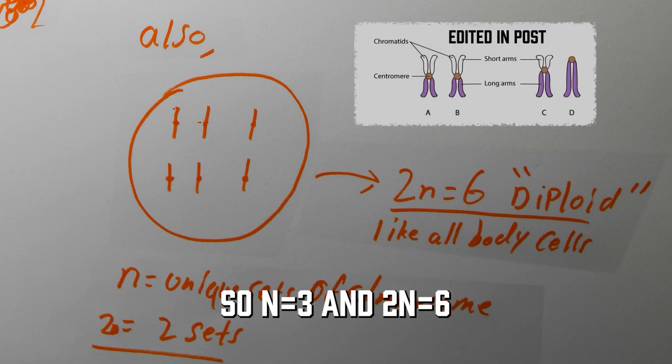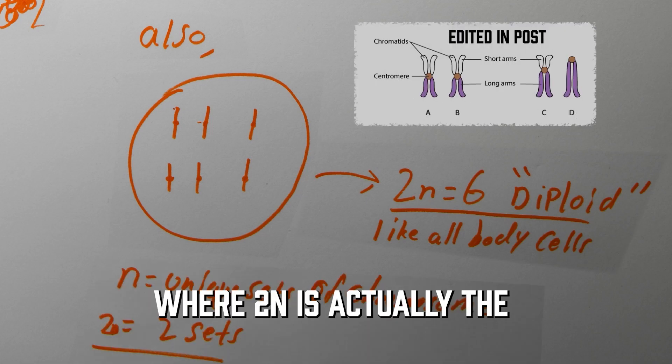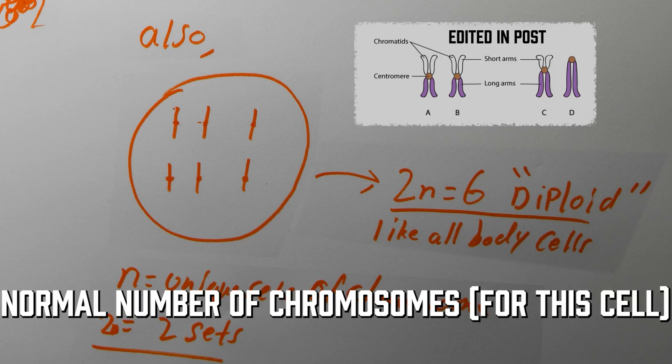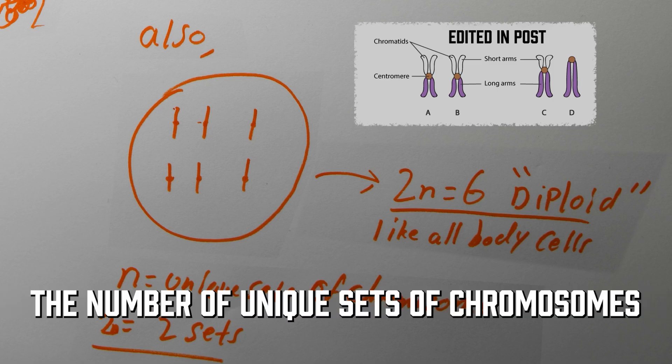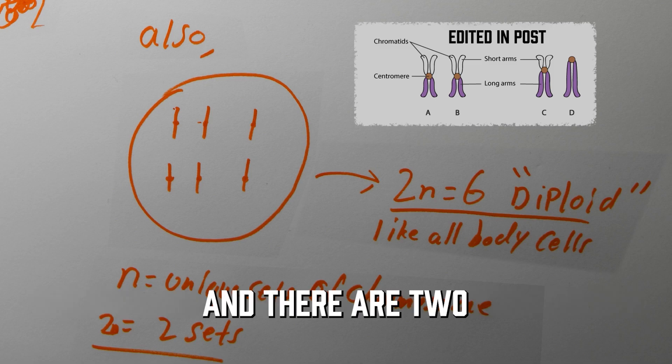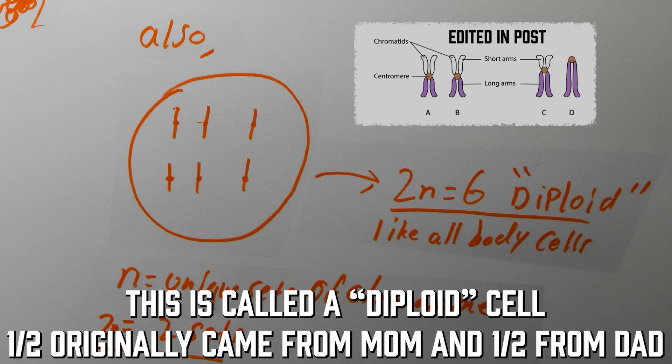So n equals 3, and 2n equals 6, where 2n is actually the normal number of chromosomes, because n stands for the number of unique sets of chromosomes in a cell, and there are 2 because this is called a diploid cell.